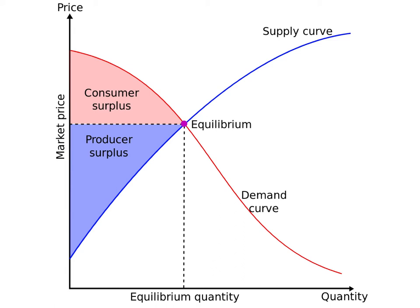Consumer surplus, shown in Figure 12.1, is the difference between willingness to pay — the demand curve — and the price actually paid. If I would pay $10 for a trip but only actually pay $1, I have $9 of consumer surplus. The producer surplus or profit is the difference between the cost of the producer providing a service, such as a bus, and the price they can charge. The area between the supply and demand curves is thus the total benefit.